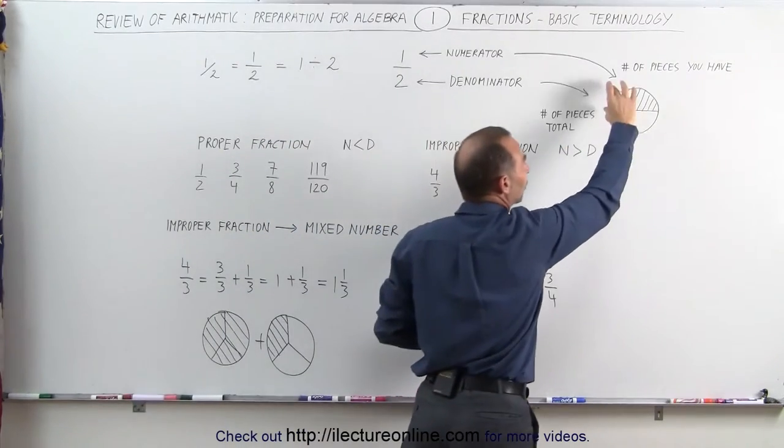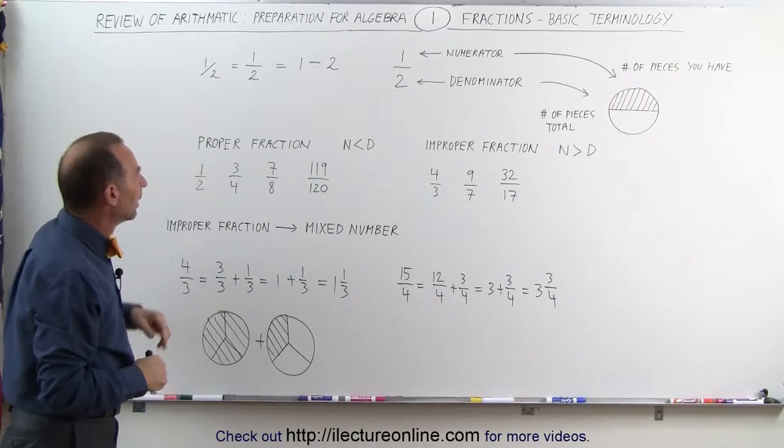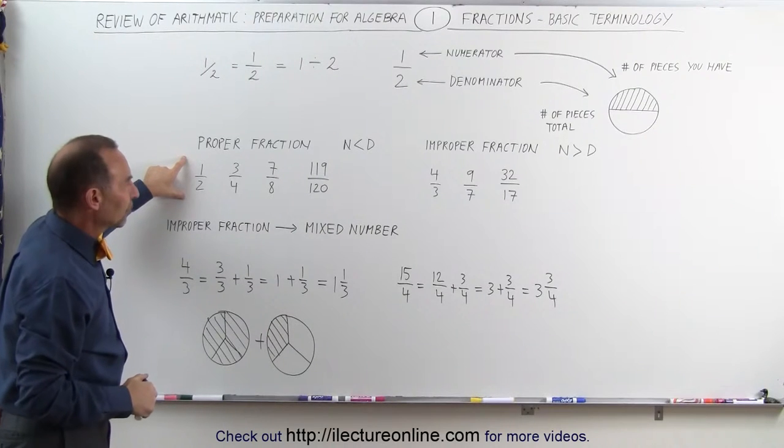Meaning you don't have the whole circle, you have only a portion of the circle. They're called proper fractions.